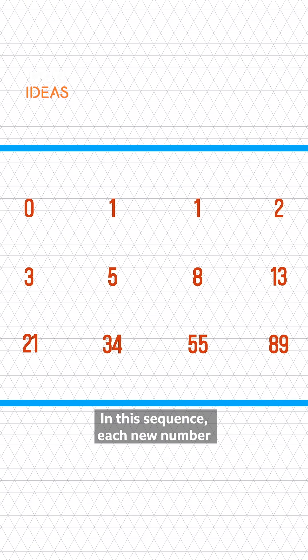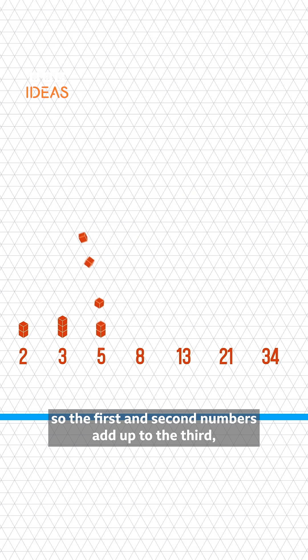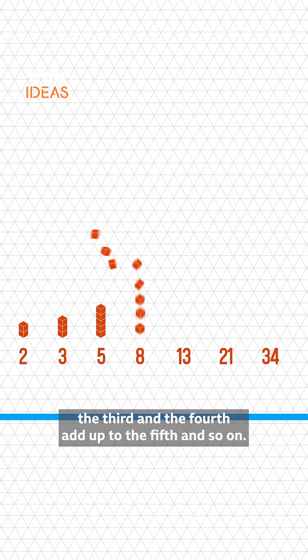In this sequence, each new number is the sum of the previous two, so the first and second numbers add up to the third, the third and the fourth add up to the fifth, and so on.